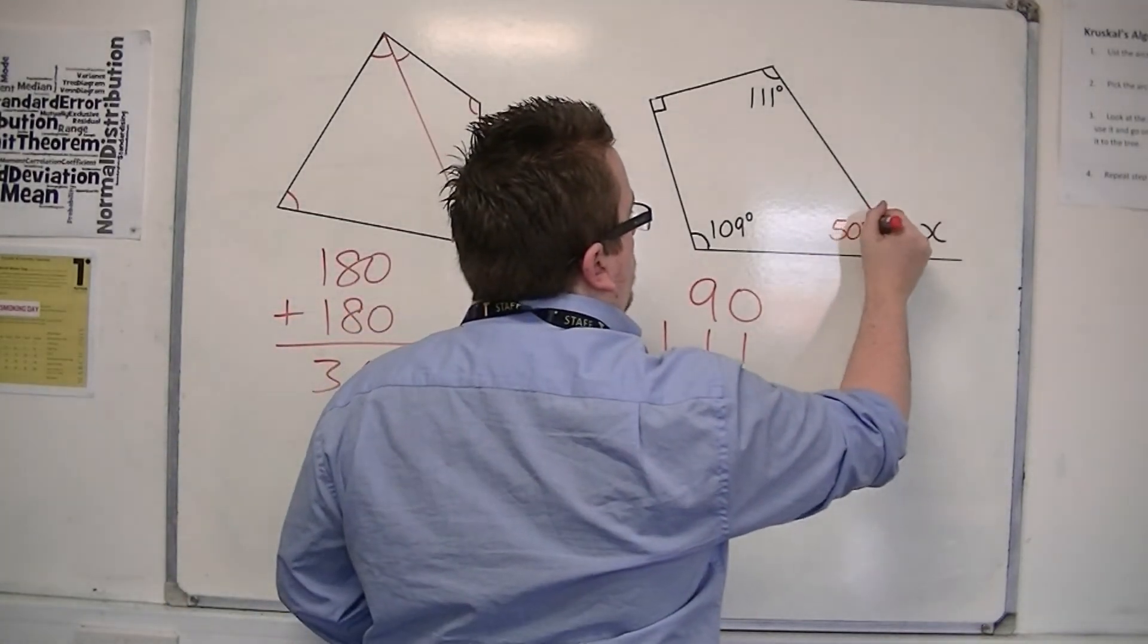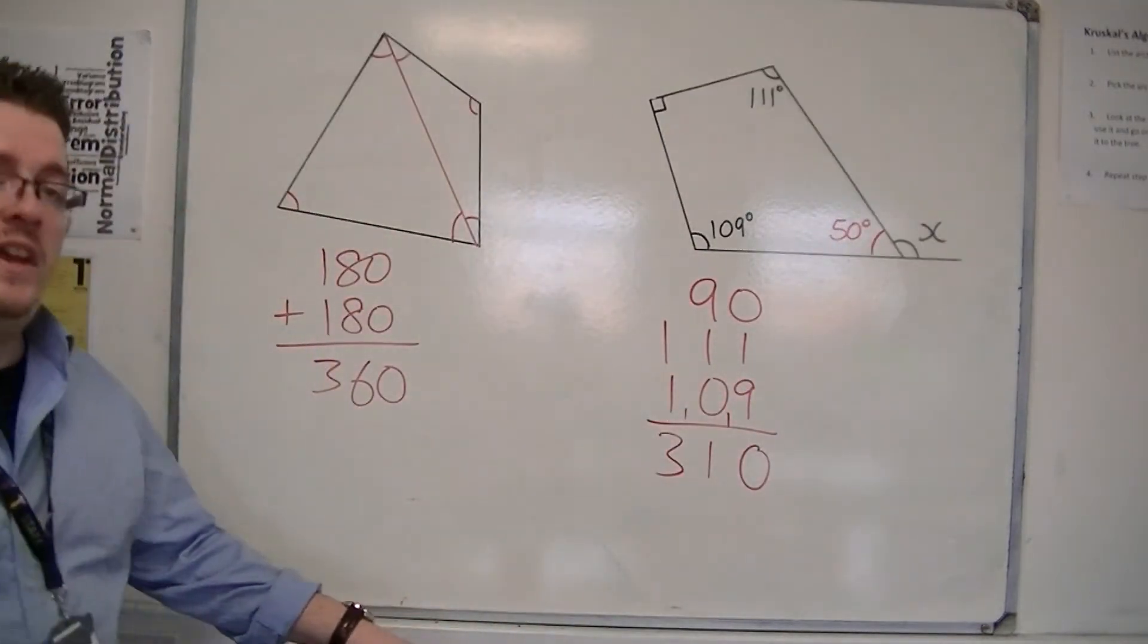So the missing angle must be 50 degrees, because they must add up to 360.